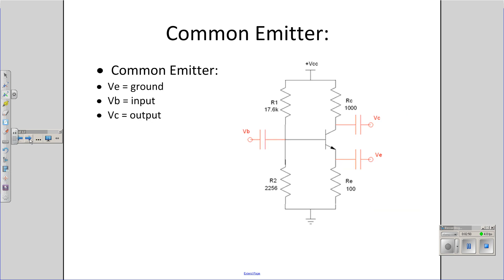For a common emitter amplifier, I'm going to take the emitter, tie it to ground. Here's your output. Here's your input. And again, it's an AC signal. DC signals won't get through those decoupling capacitors. Only the AC signal will.